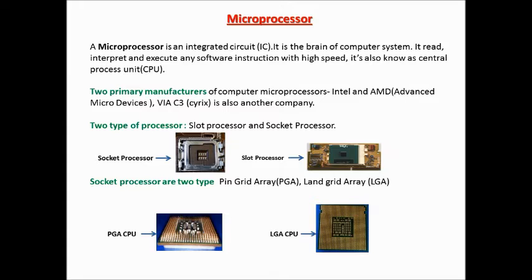Another manufacturer is VIA C3, or Cyrix. There are two types of processor: slot processor and socket processor. Slot type processors are old technology. Nowadays we see socket type processors, and socket type processors are of two types: Pin Grid Array (PGA) and Land Grid Array (LGA). Here are pictures of slot and socket processors, also PGA and LGA processors, for your better understanding.